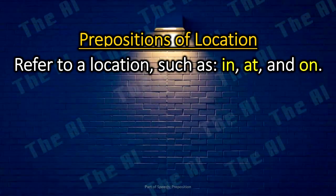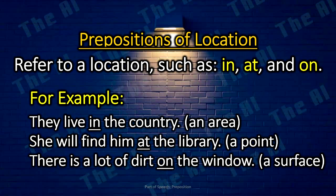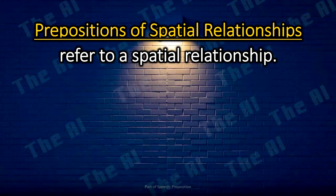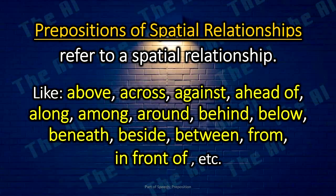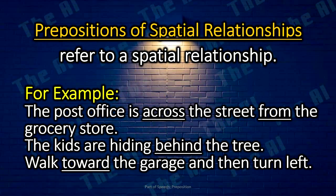Prepositions of location refer to a location, such as in, at, and on. For example: They live in the country. She will find him at the library. There is a lot of dirt on the window. Prepositions of spatial relationships refer to a spatial relationship, like above, across, against, ahead of, along, among, around, behind, below, beneath, beside, between, from, in front of, etc. For example: The post office is across the street from the grocery store. The kids are hiding behind the tree. Walk toward the garage and then turn left.